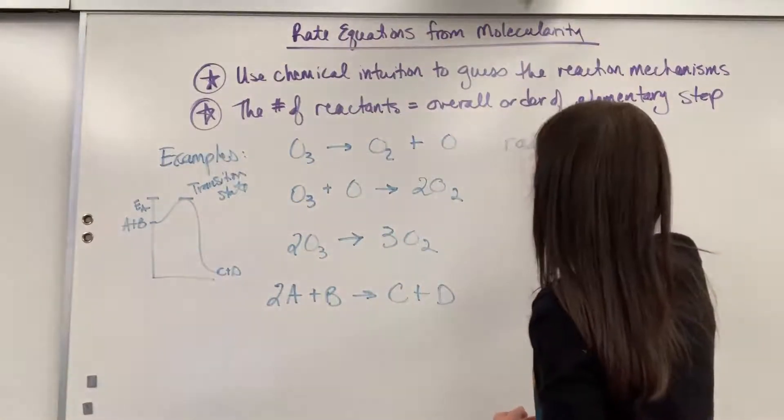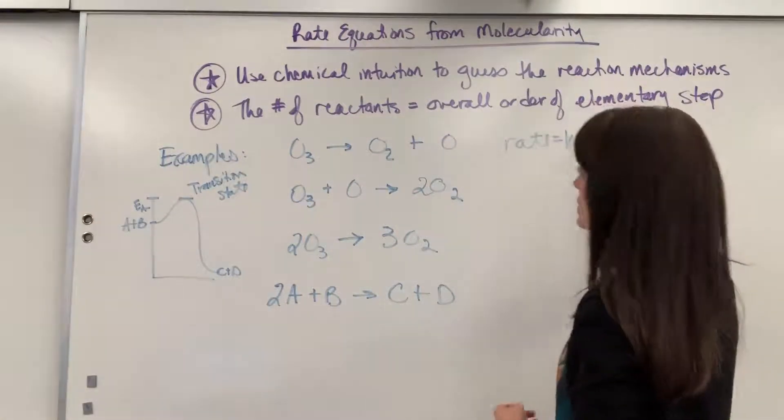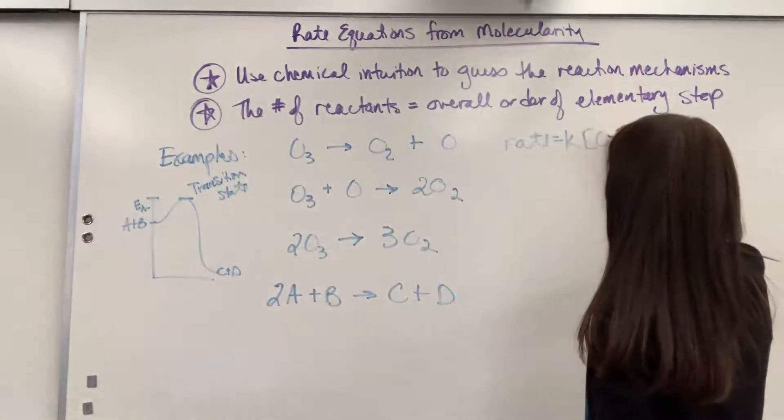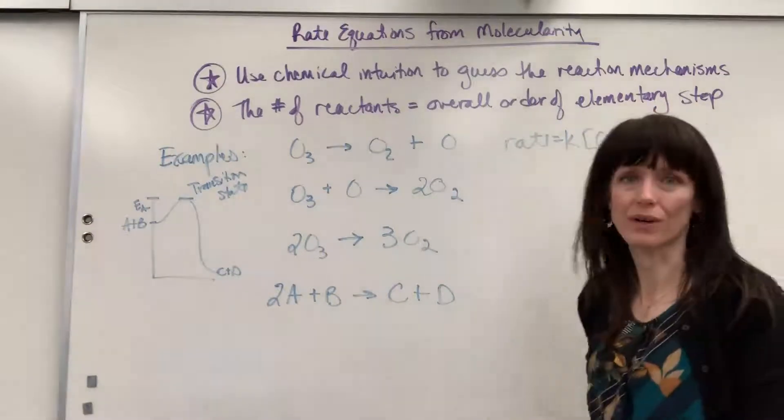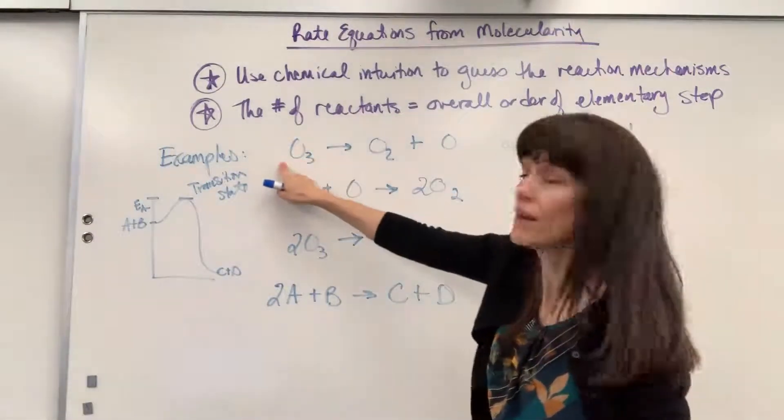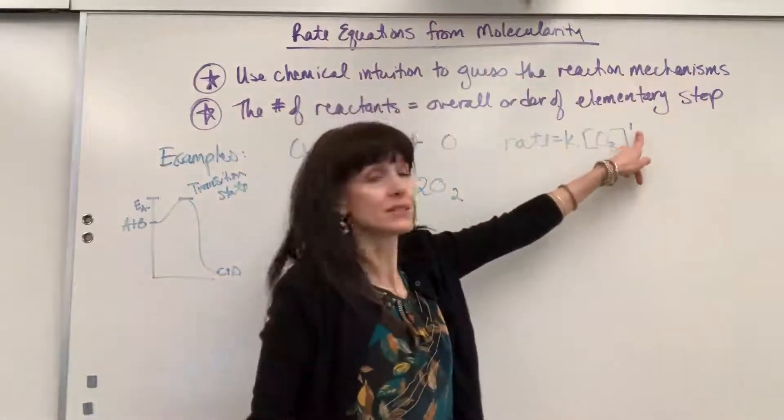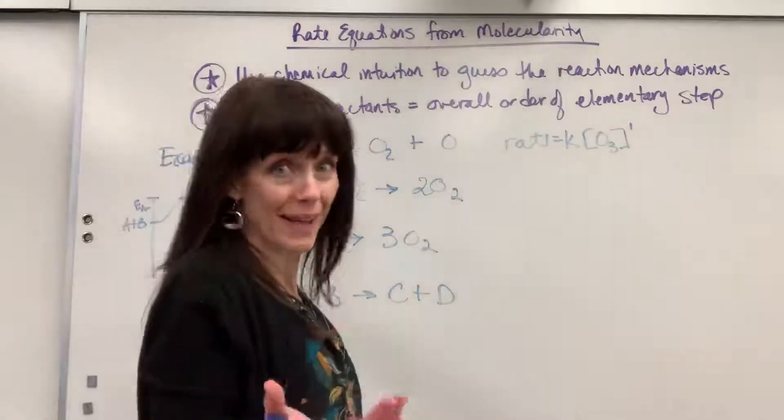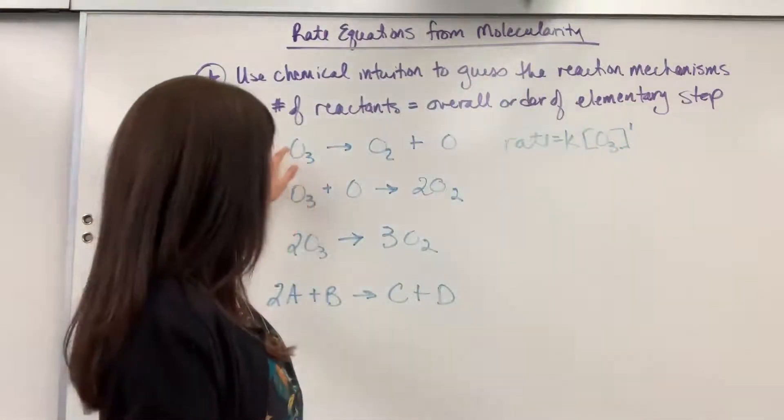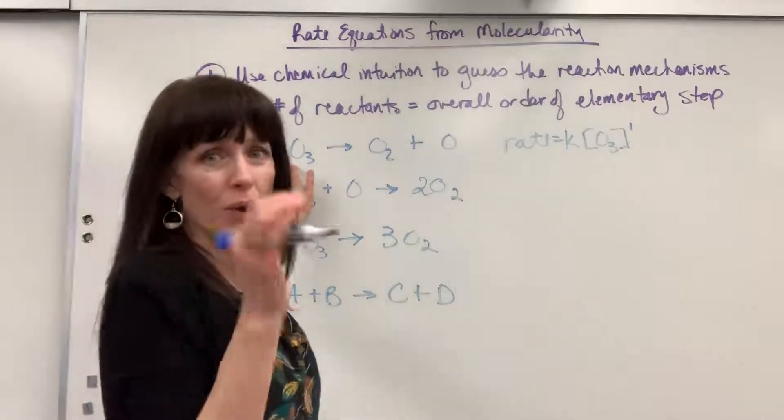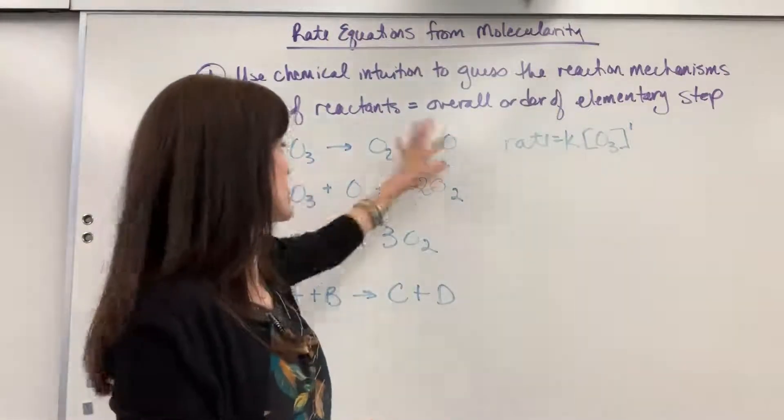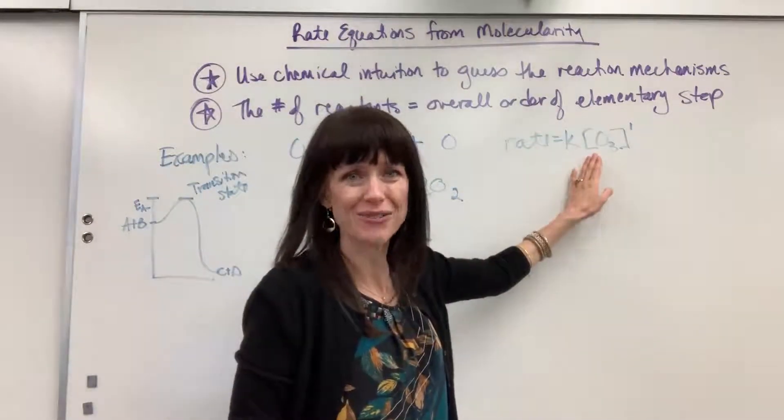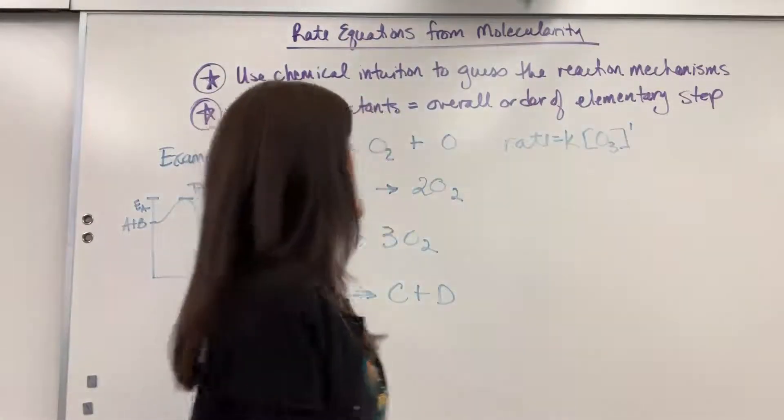You're going to start by writing rate equals the rate constant. And then you simply write down your reactants. And whatever the coefficient is, that is your order. So I've got one O3, one ozone. So this is going to be first order. And then notice with a unimolecular, when I've got one reactant in this elementary step called unimolecular. Unimolecular is always going to be a first order rate law, first order rate equation.